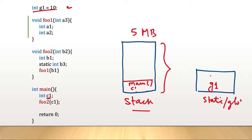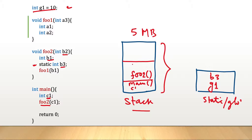Main then calls foo2 and passes c1. So now main is executing, but foo2 needs to return first. So foo2 is pushed onto the stack. foo2 has local variables b1 and b2, and one static variable b3. b3 will go into the static section, while b1 and b2 are placed in the stack frame assigned to foo2.